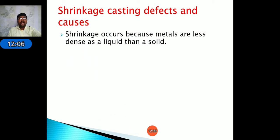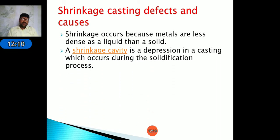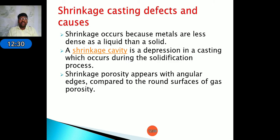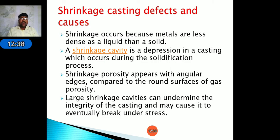Shrinkage defects occur mainly during solidification. As molten metal converts from liquid to solid, temperature decreases and the volume of the casting reduces, forming shrinkage. Shrinkage porosity appears with angular edges compared to the round surface of gas porosity. Large shrinkage cavities can undermine the integrity of the casting and may cause it to break under stress, as stress concentration is higher at the defect point.